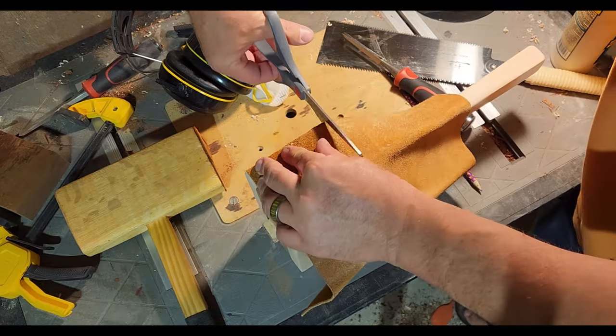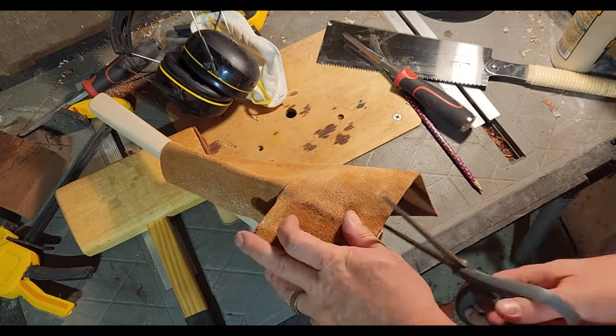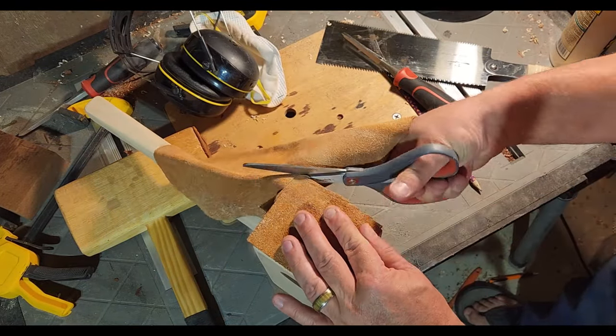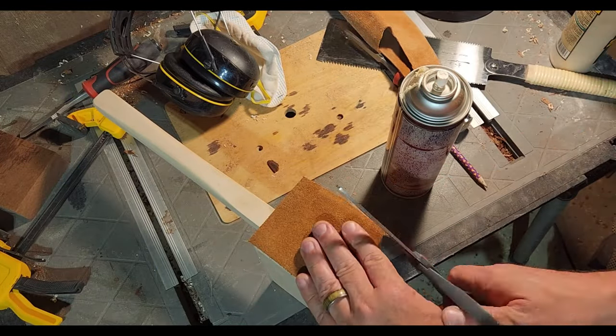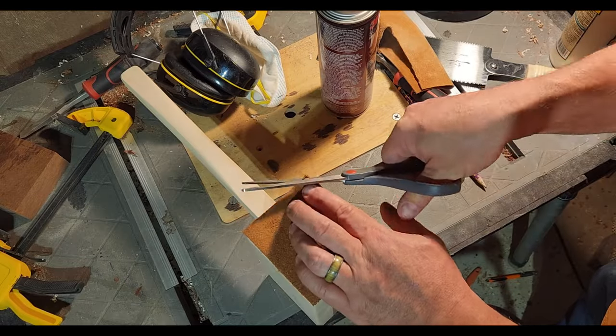I cleaned up any glue squeeze out, ignored any gaps or imperfections, and then glued a piece of leather on to soften one face. I may add a piece of cork to the other, but I don't have any at the moment, so I'll do that later.